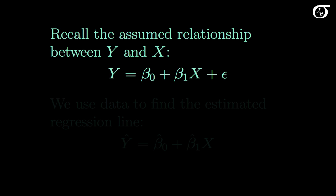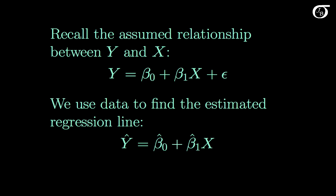Beta0 and beta1 are parameters that are typically unknown, and so we use sample data to find the estimated regression line. Y hat, the predicted value of Y, is equal to beta0 hat plus beta1 hat times X.